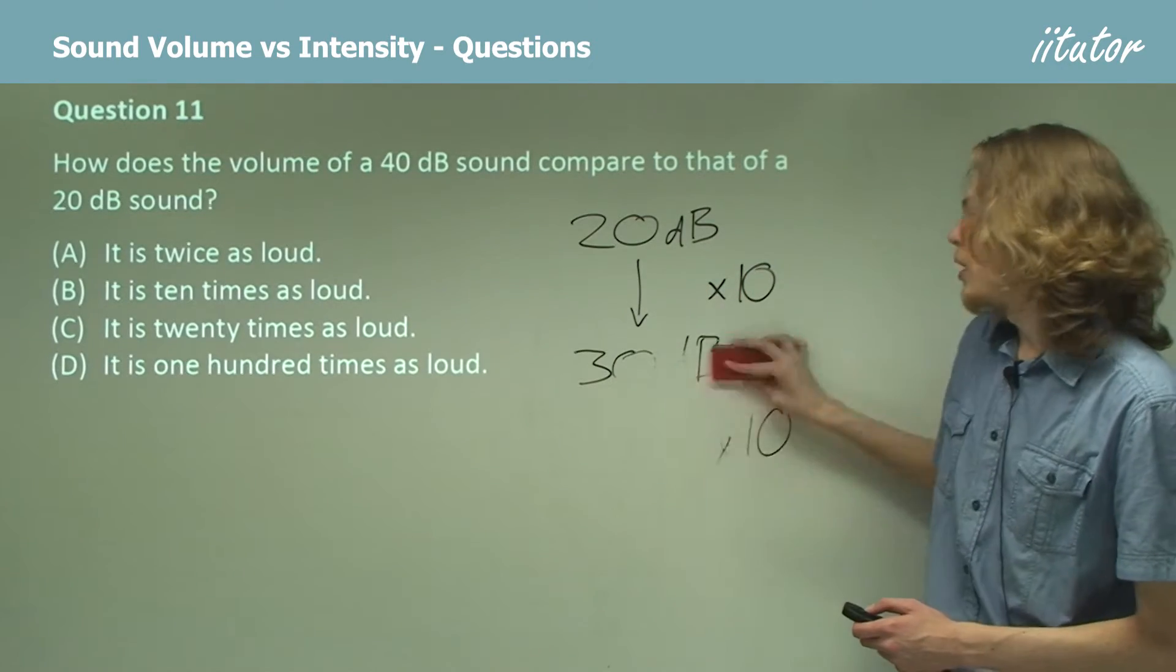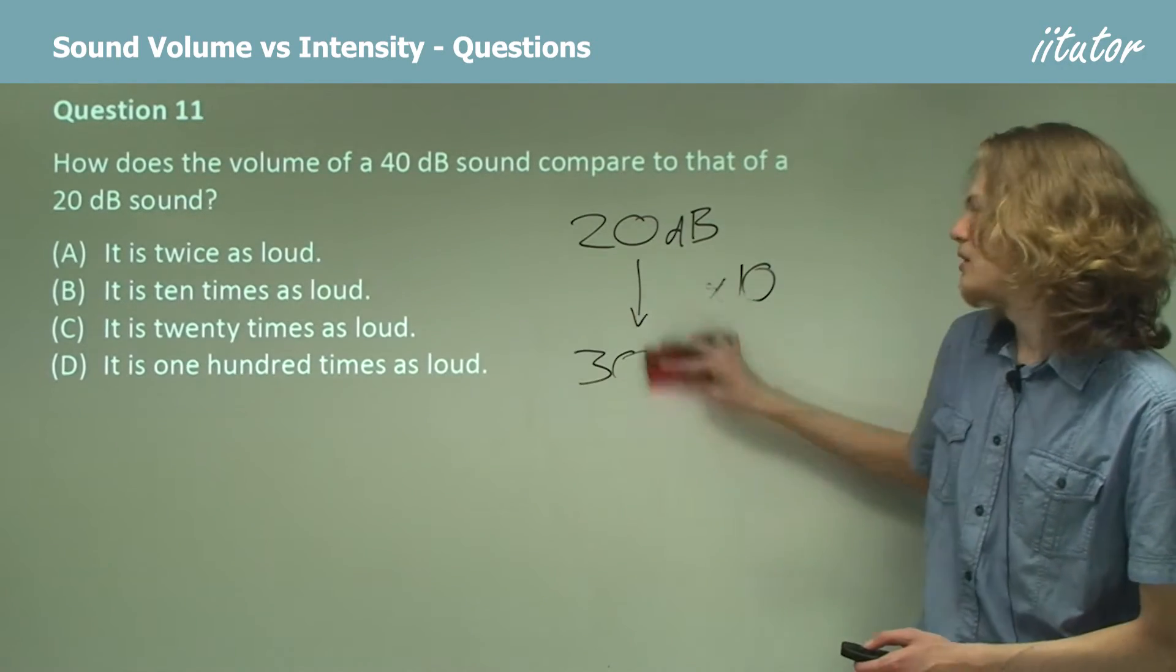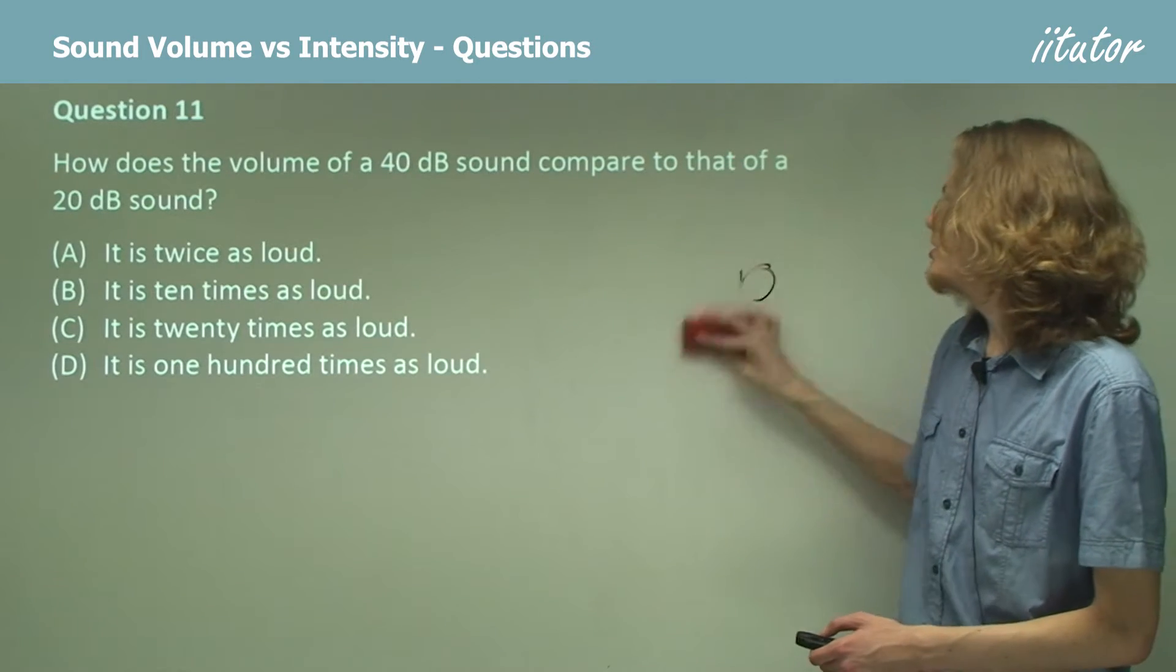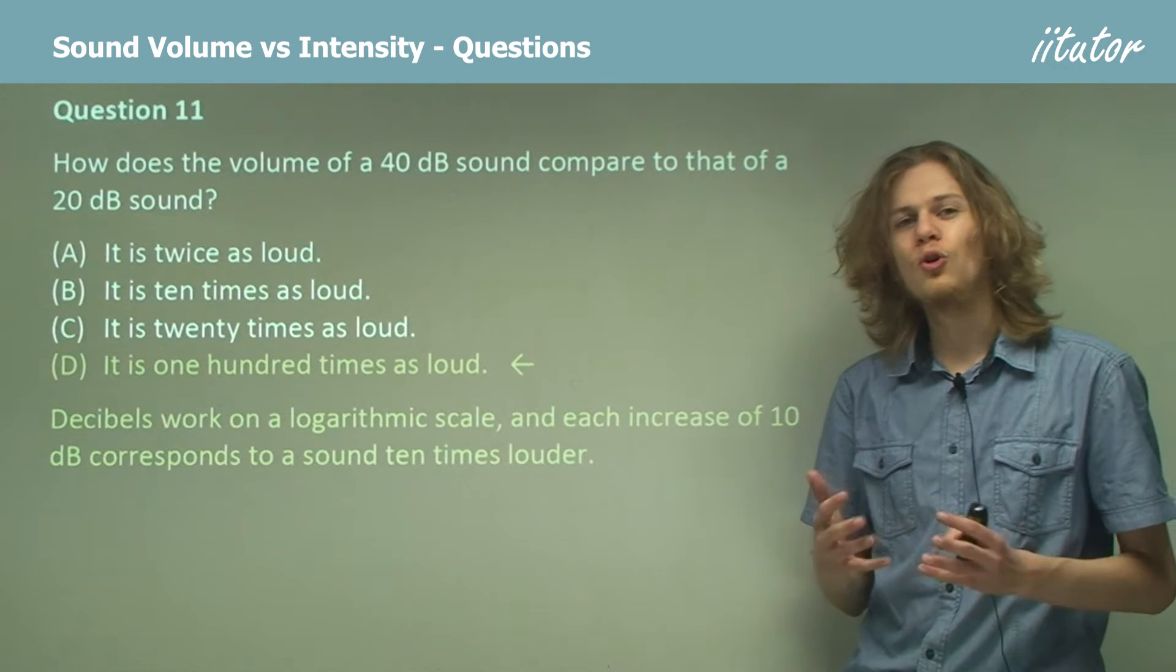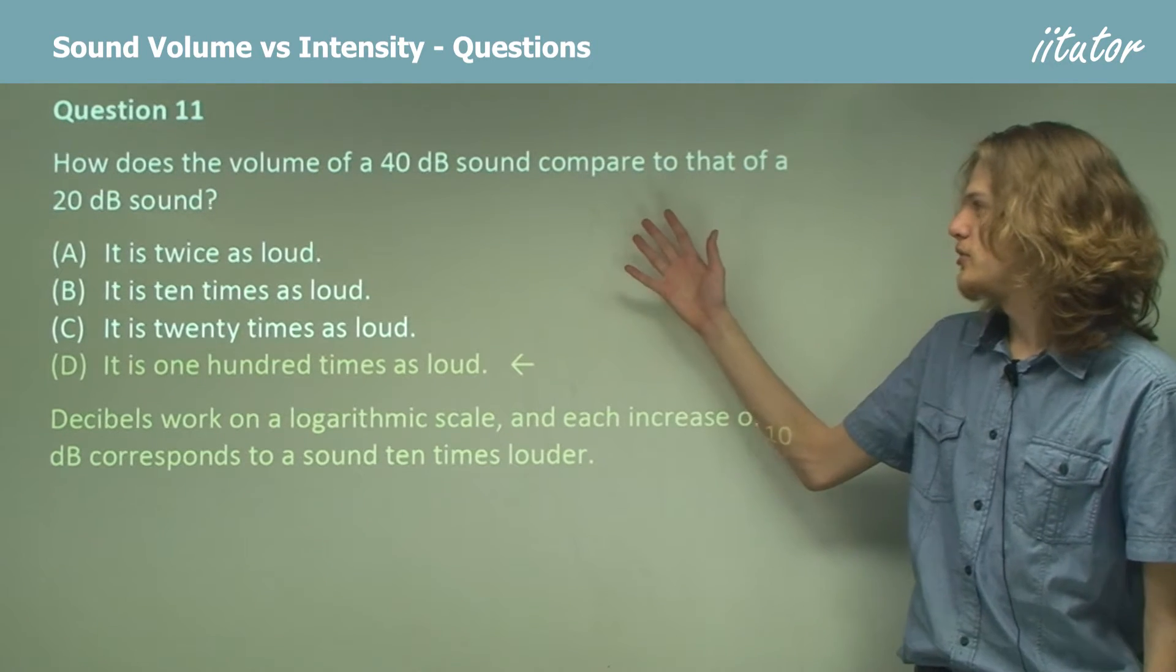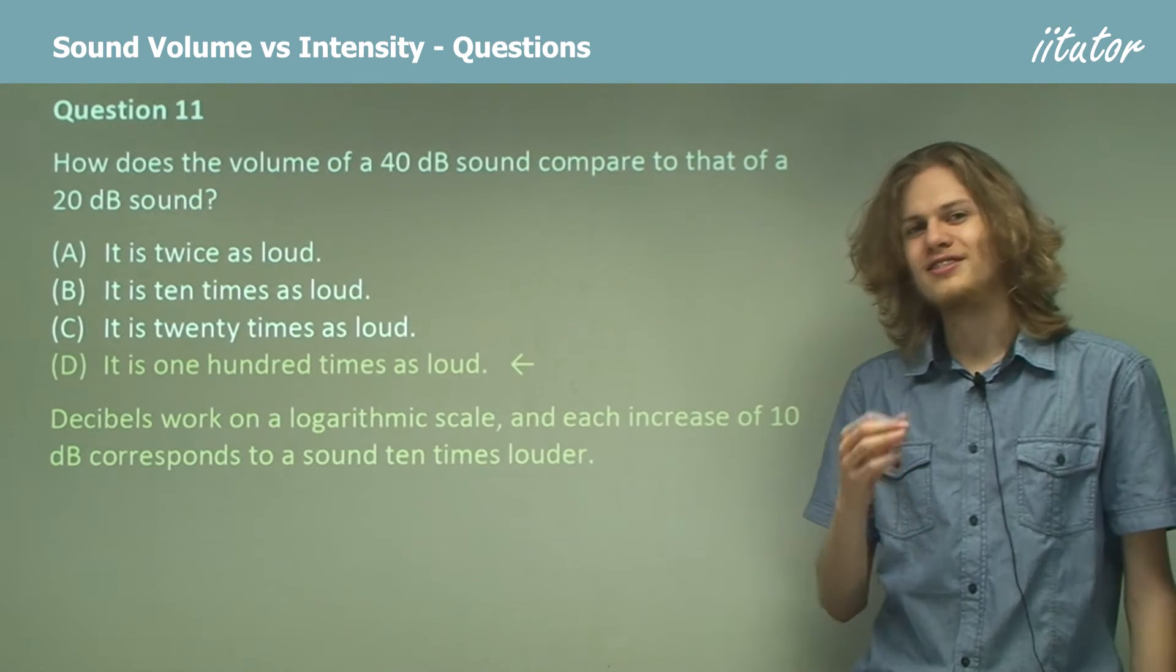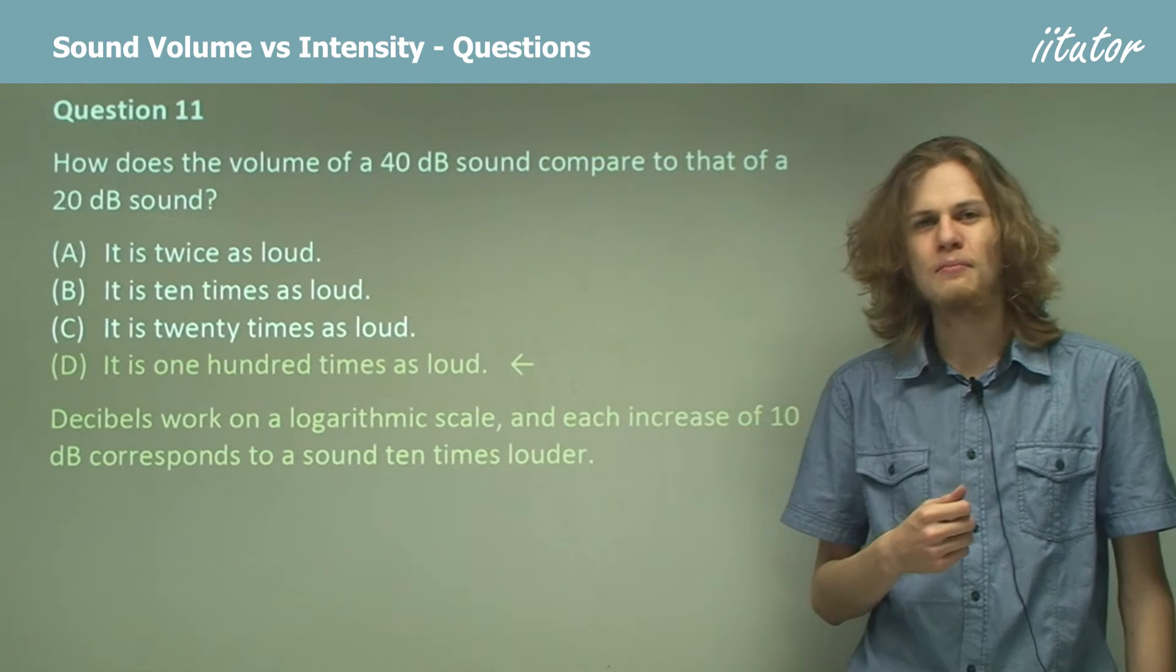So that means that our answer is not twice as loud as you might expect if we had a linear scale, and not even 20 times as loud, but 100 times as loud. This is because decibels work on a logarithmic scale. If we get something that's 20 decibels louder, then it's 10 to the power of 2 times more intense.